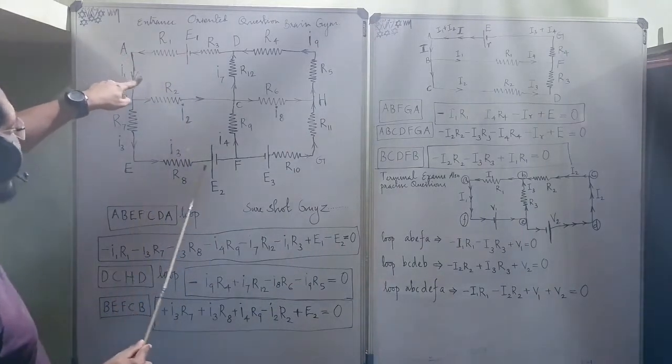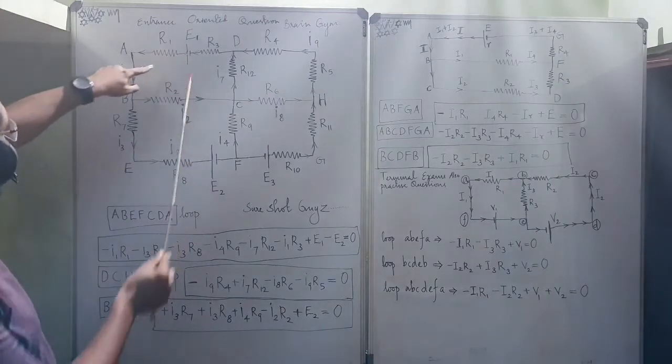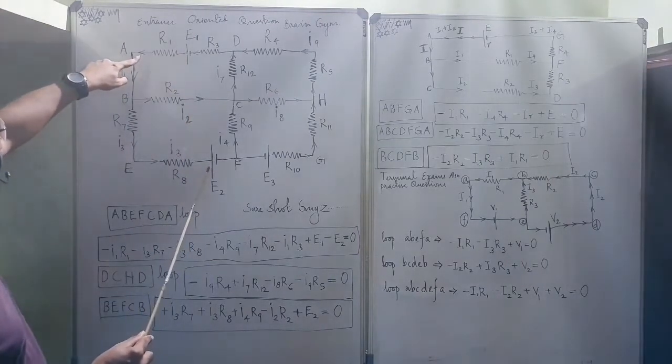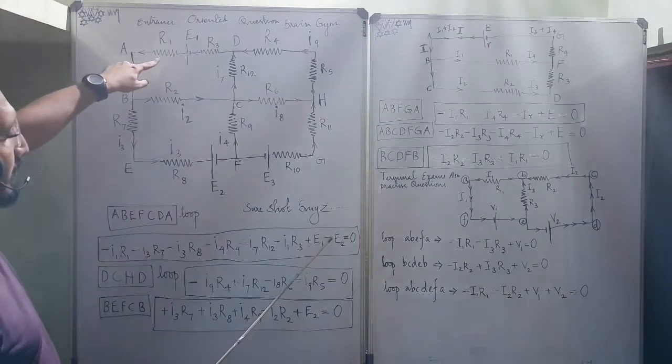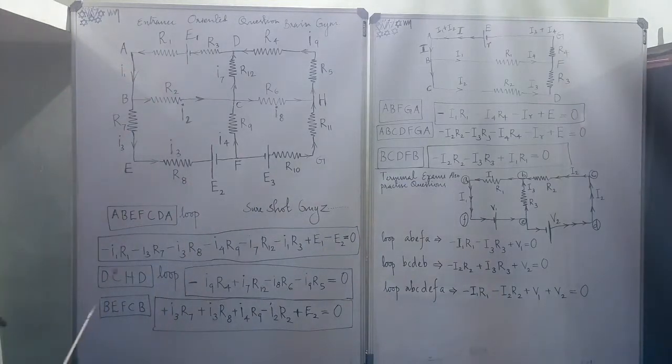And what is this thing? A cell, earlier we have written one cell. Another cell which is placed in opposite. The positive, it is encountered by the another positive of the cell. So, write this cell to be minus. Minus E2. This loop is complete.